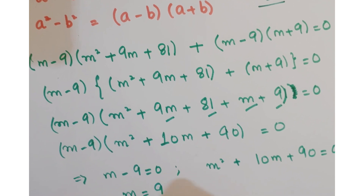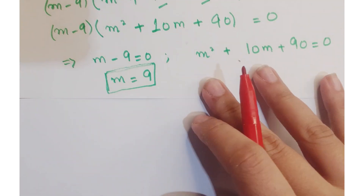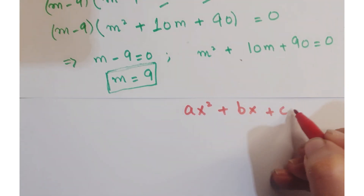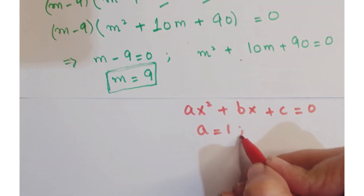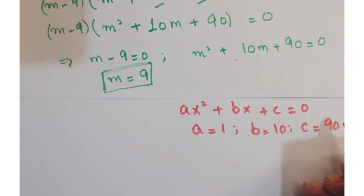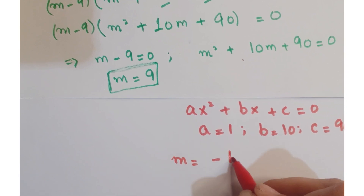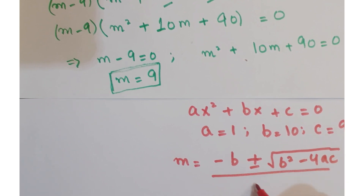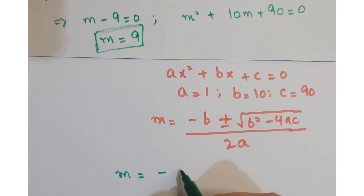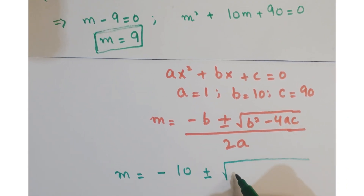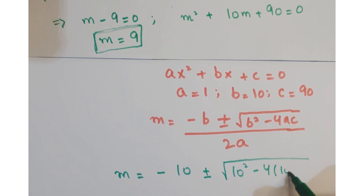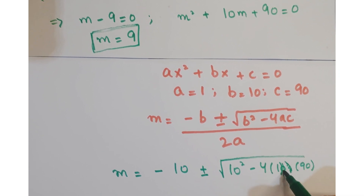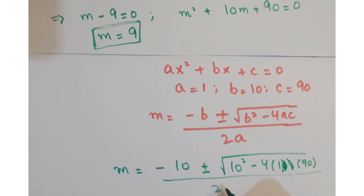So one value of m is equals to 9. Finding the other two solutions of m by comparing this equation with the standard quadratic equation, we have a = 1, b = 10, and c = 90.